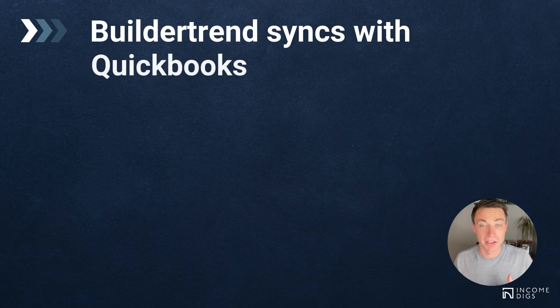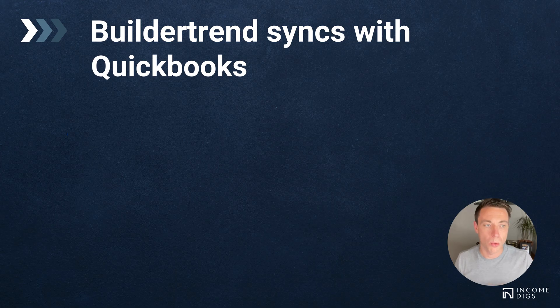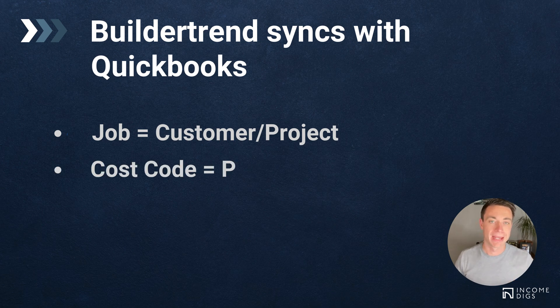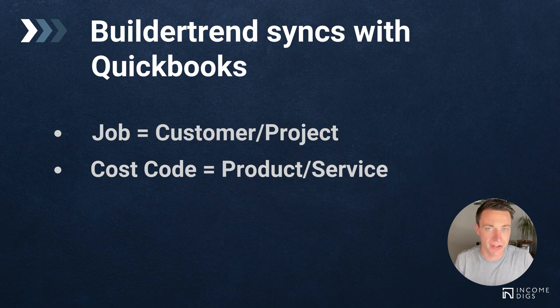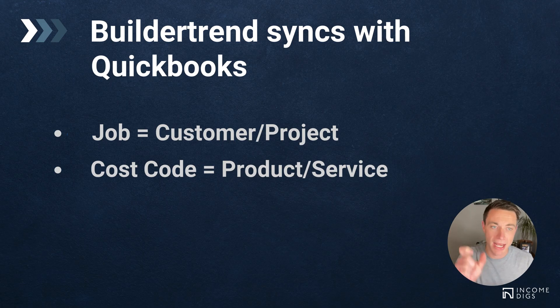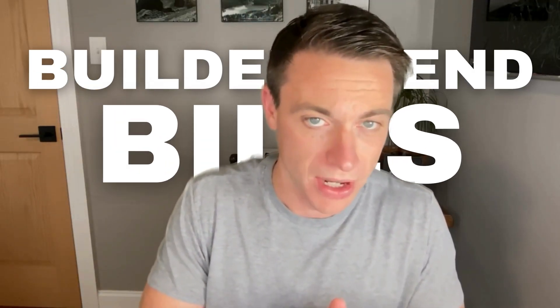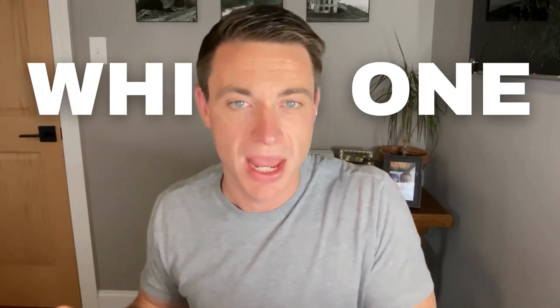That older video is still really relevant. BuilderTrend syncs with QuickBooks — it's a two-way sync, which is an improvement that happened about four years ago. It syncs with a couple of specific areas. First, a job in BuilderTrend equals a customer or a project in QuickBooks. Second, a cost code or cost category in BuilderTrend syncs with a product or service in QuickBooks. Setting this up is essential and is the first step to ensure the two can talk to each other.